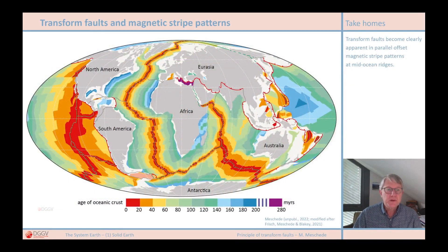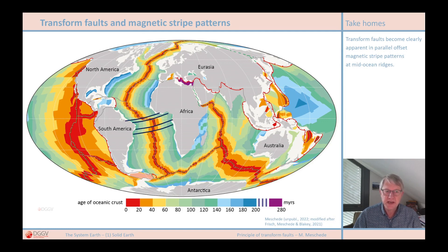If you look at the age map of the oceanic crust, you can also clearly see the offset of the ridge segments. The magnetic stripe patterns always arise parallel to the ridge axis, so they are inevitably offset. Here again are indicated the transform faults and fracture zones between Africa and South America to show the clear offset.